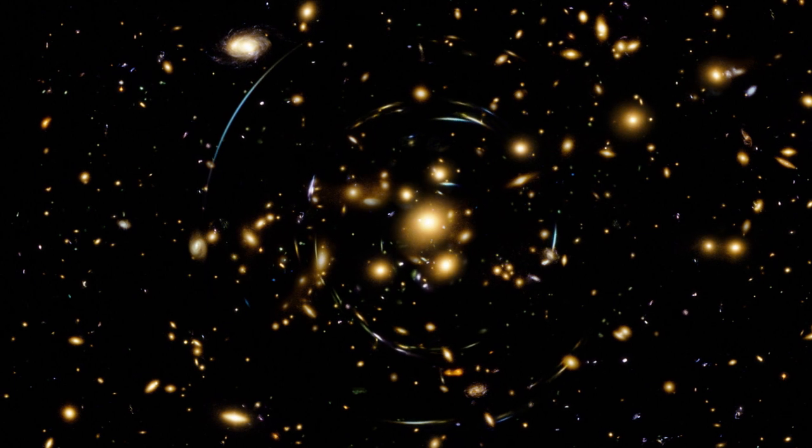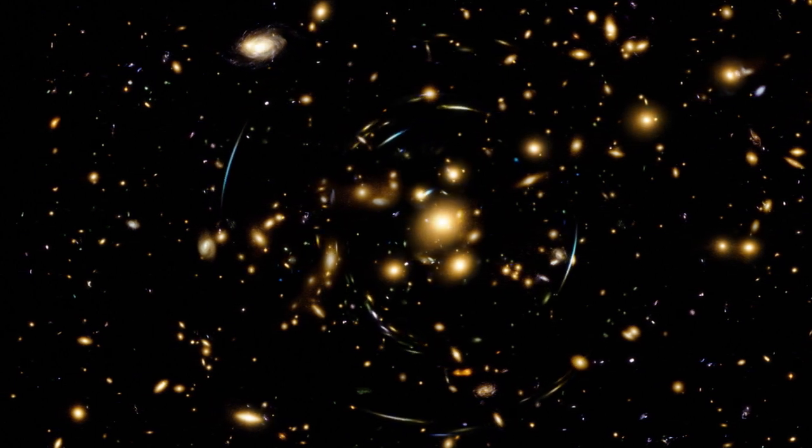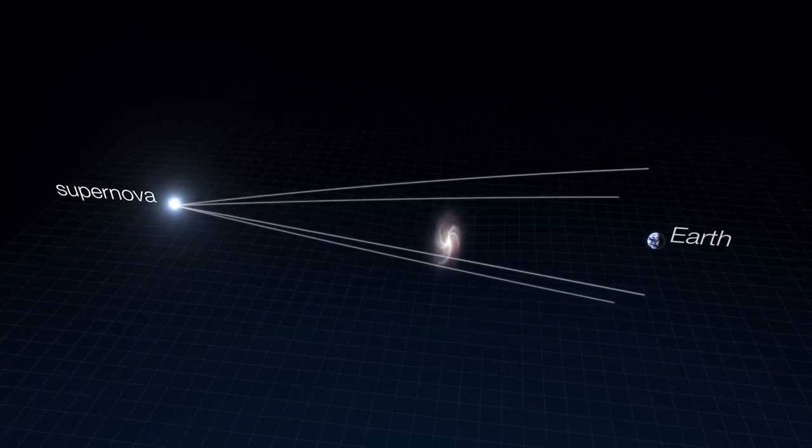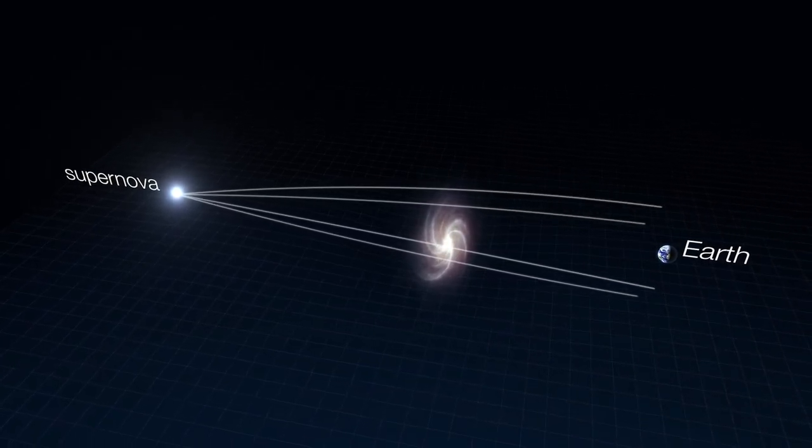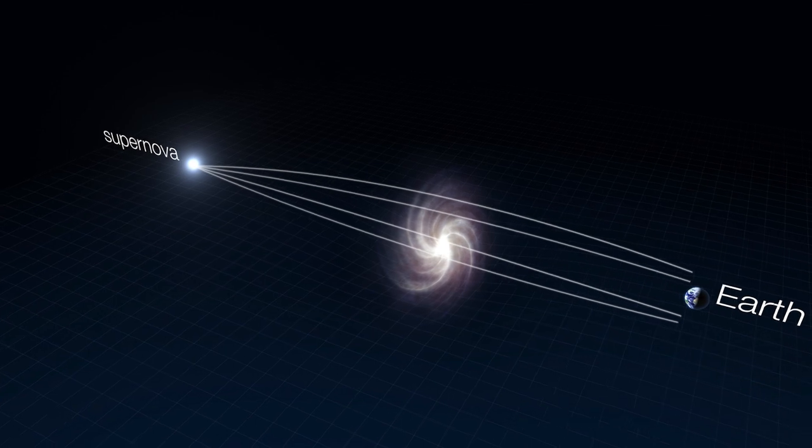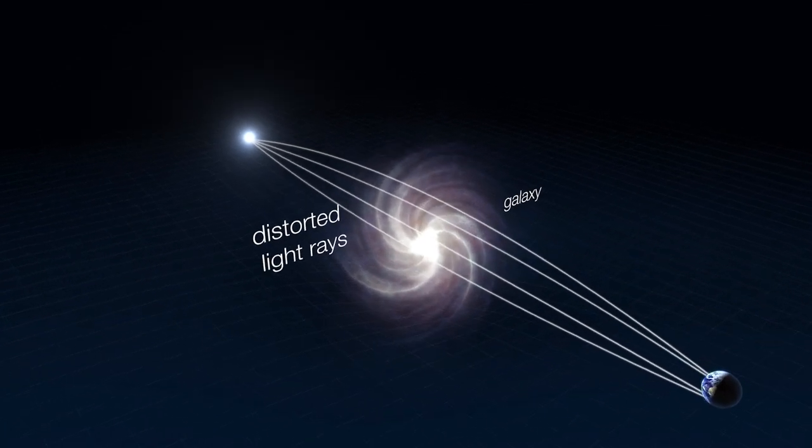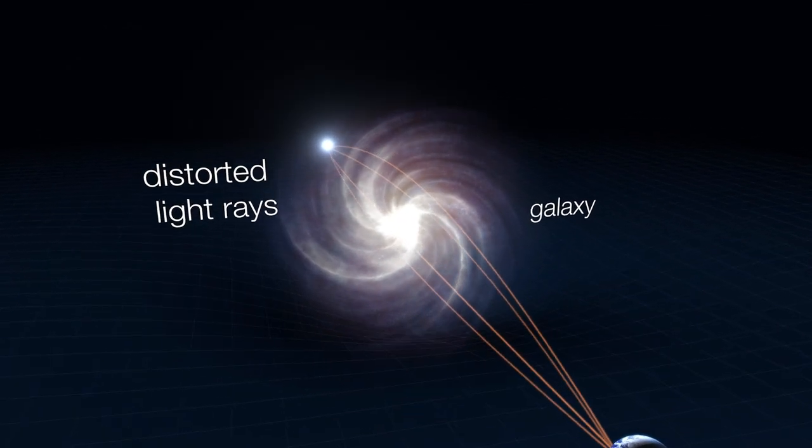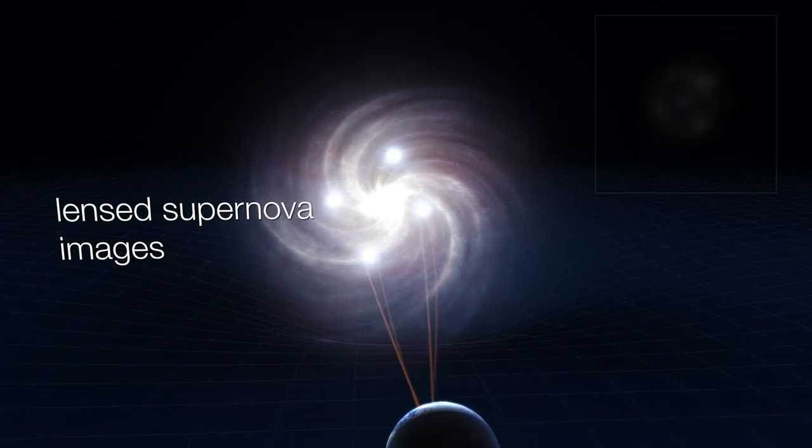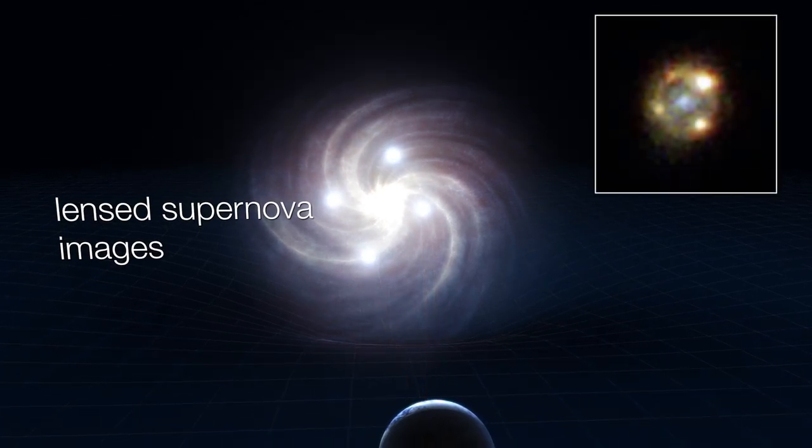Gravitational lensing is a phenomenon created by extremely concentrated masses, like the cores of galaxies or galaxy clusters. Their strong gravity warps the surrounding space, and light from distant objects travelling through that warped space is curved away from its straight-line path as if passing through a lens.